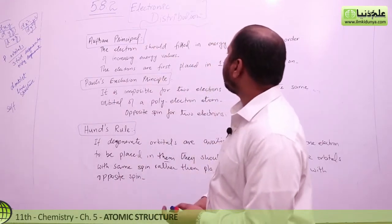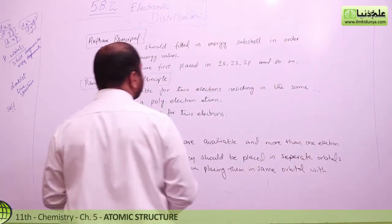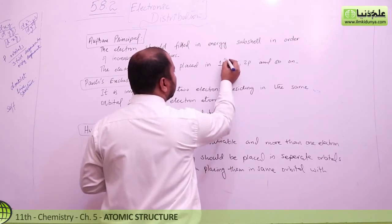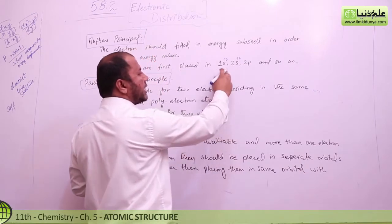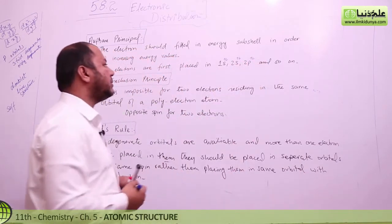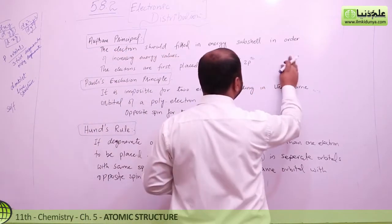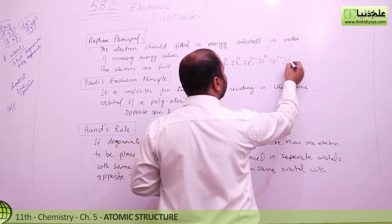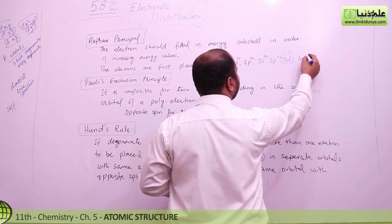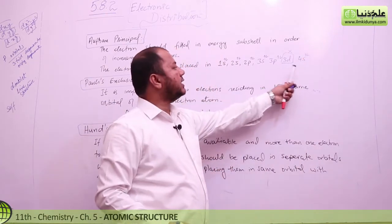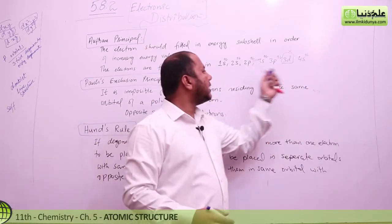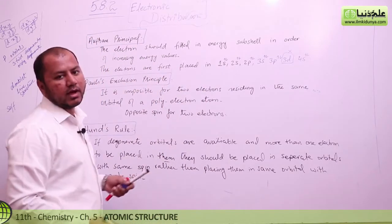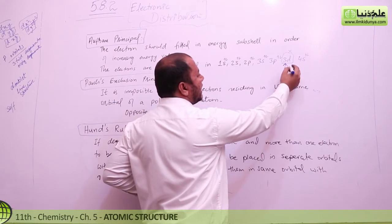The Aufbau principle states that electrons should be filled in energy sub-shells in order of increasing energy values. For example, electrons fill 1s first, then 2s, then 2p, then 3s, then 3p, then 3d, then 4s — and that is the order in which electrons enter the orbitals.